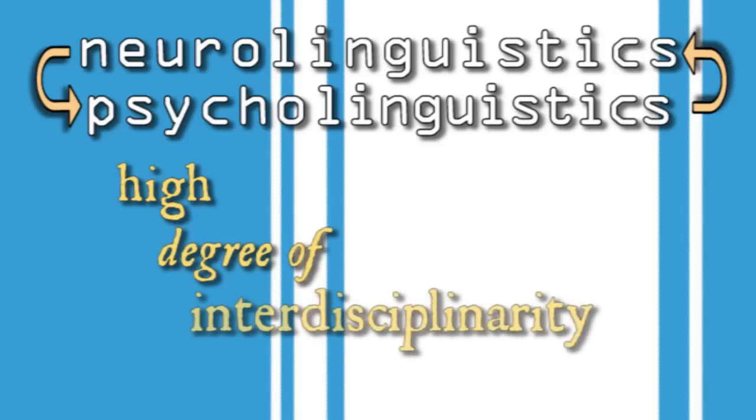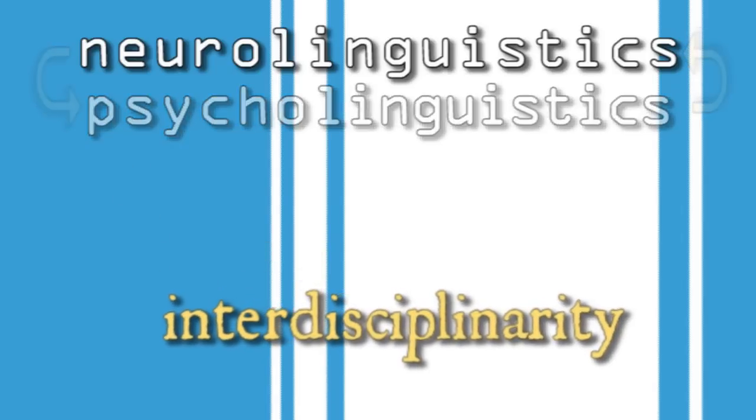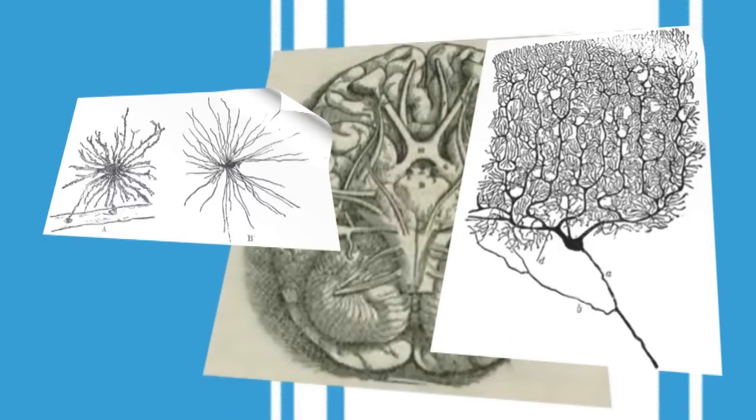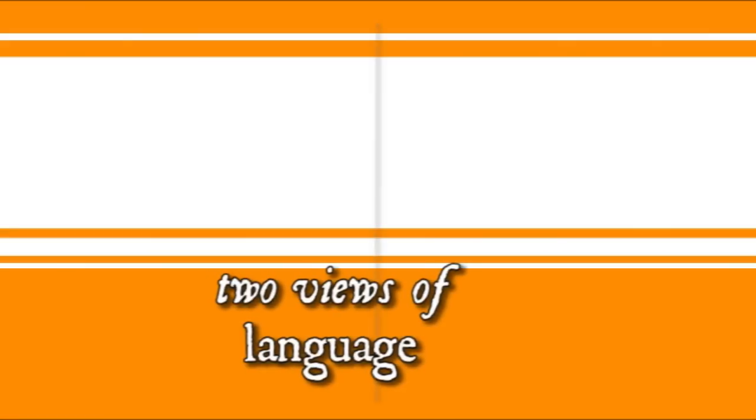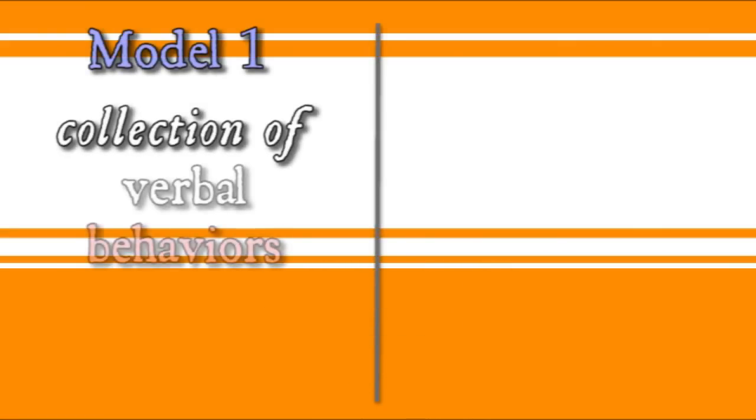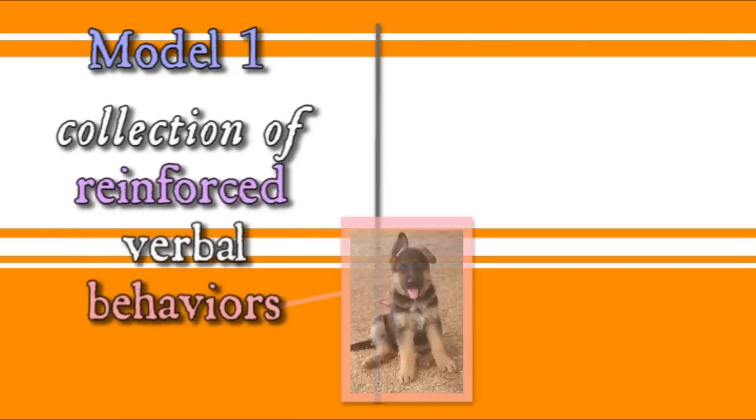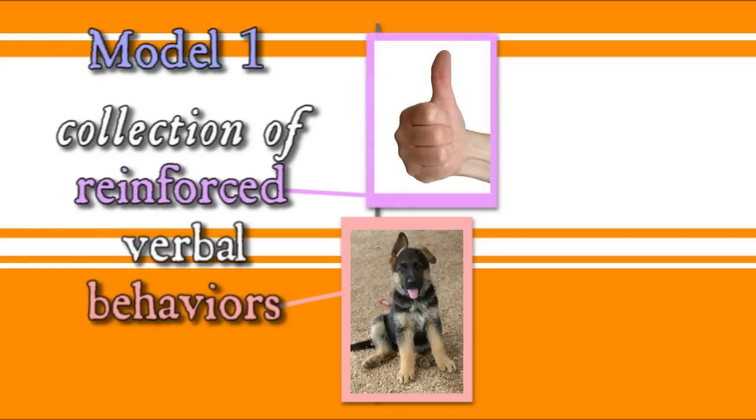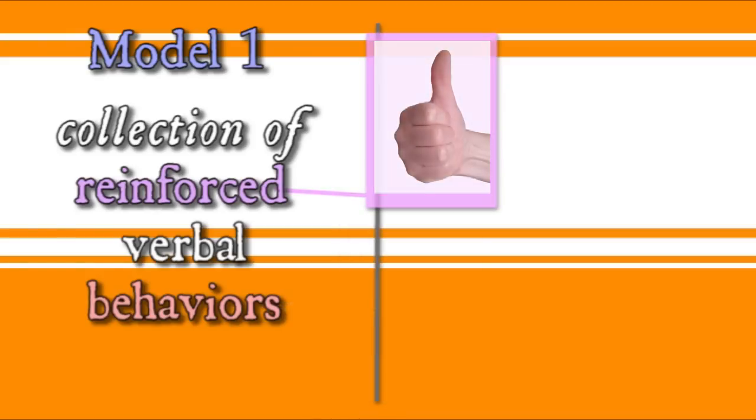With all this stuff about the brain going through your brain, think for a minute about two 20th century models of language. In model number one, human language is a collection of behaviors that are conditioned by external stimuli. Verbal behavior language that gets a favorable response will be reinforced and repeated. This is a perspective called behaviorism, and it places the brain in a background role.